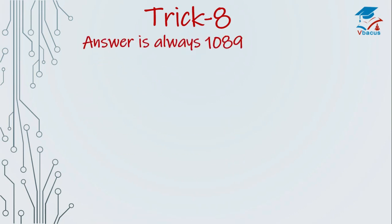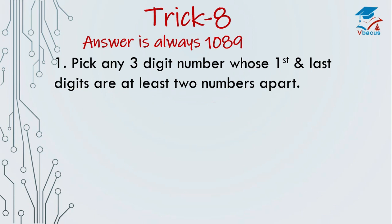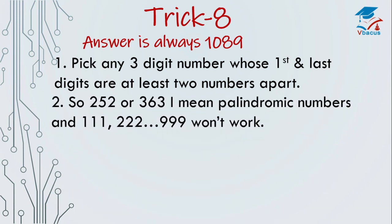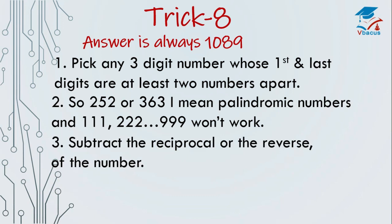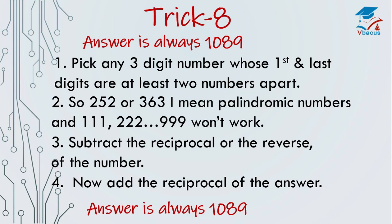Trick 8. Answer is always 1089. Pick any 3-digit number whose first and last digits are at least 2 numbers apart. So, 252 or 363, I mean palindromic numbers and triple 1, triple 2, triple 3, triple 4, triple 9 won't work. Subtract the reciprocal or reverse of the number. Now, add the reciprocal of the answer. Answer is always 1089.